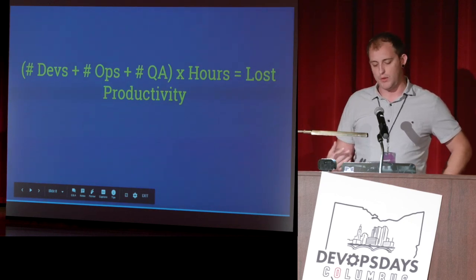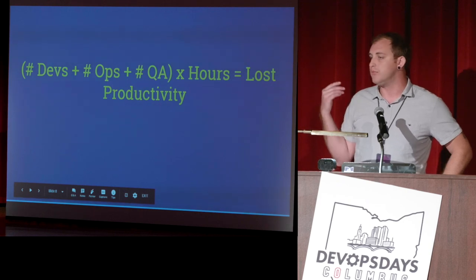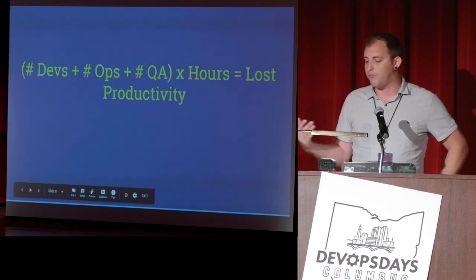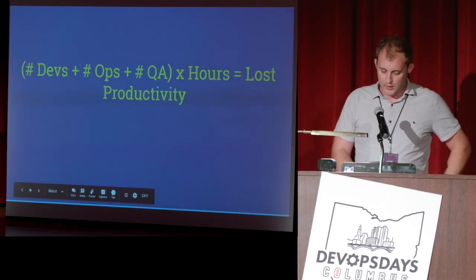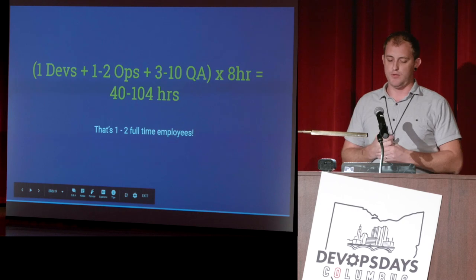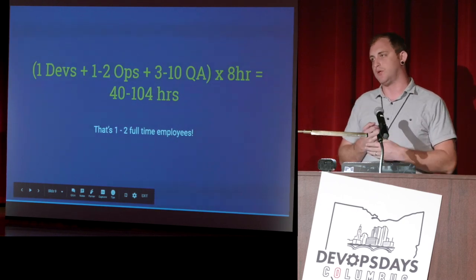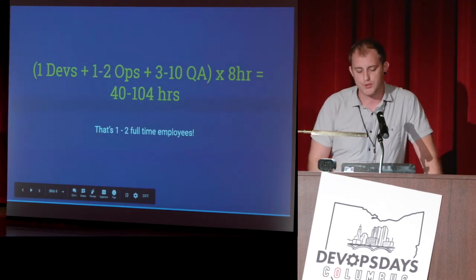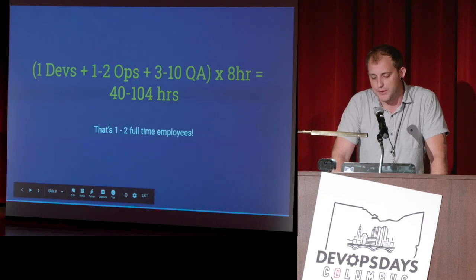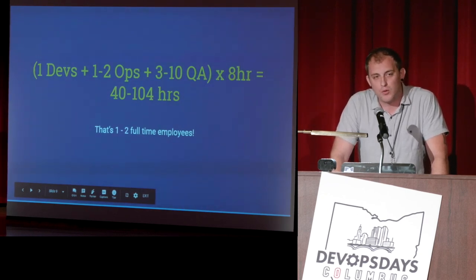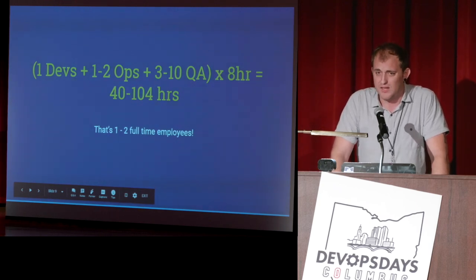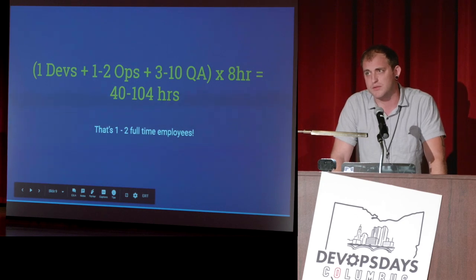I've had a client tell me they've had eight hours of downtime in their non-prod environments a week, which has been a huge issue. The loss of productivity — how many devs, ops, and QA members are not working toward their sprint — in that environment there's usually at least one dev, one to two ops people called in, and three to ten QA members blocked. Multiplied by the hours of downtime, that's 40 to 104 hours lost — enough to hire one or two full-time employees.